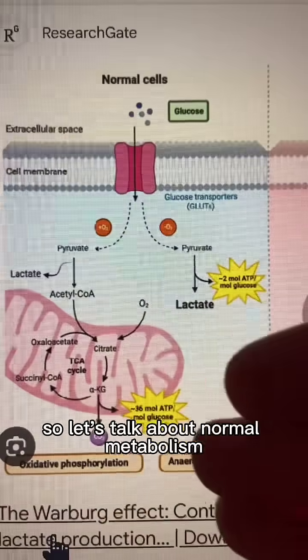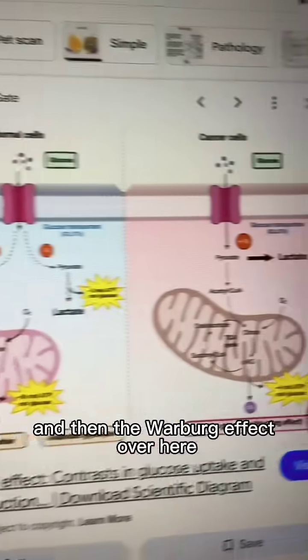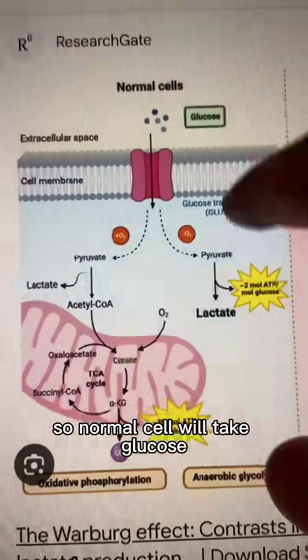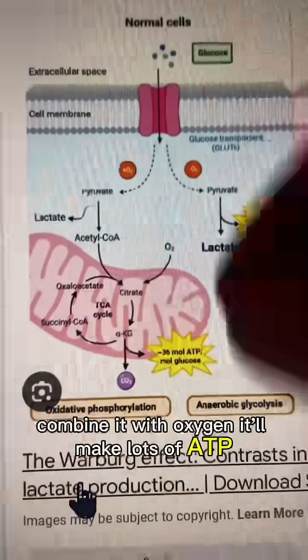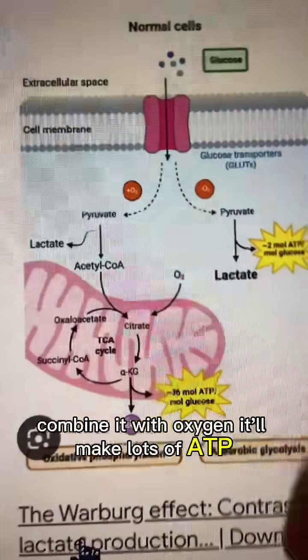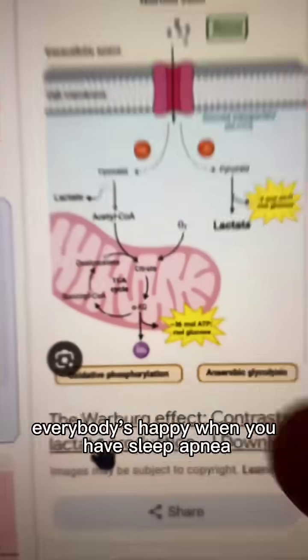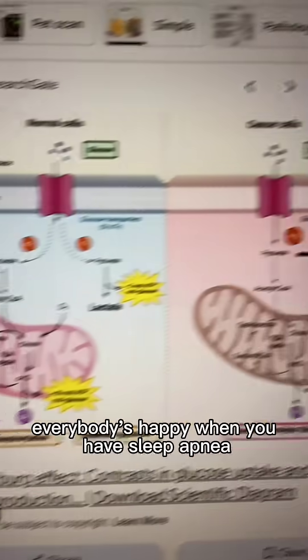So let's talk about normal metabolism and then the Warburg effect over here. A normal cell will take glucose, combine it with oxygen, and make lots of ATP. Everybody's happy.